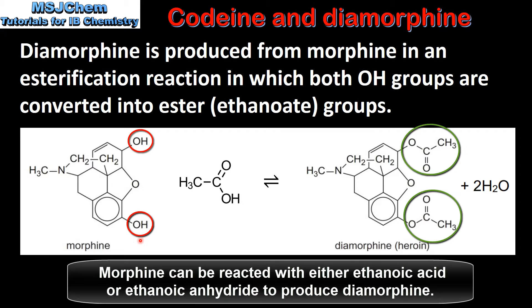As you can see, the two hydroxyl groups in morphine are replaced by two ester groups. This has the effect of making diamorphine a less polar molecule and more lipid soluble.